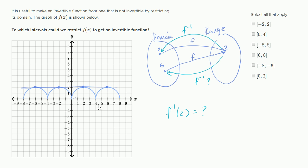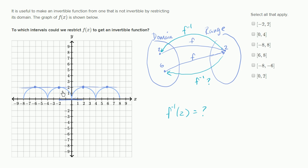So when we look at the intervals we could restrict to in order to get an invertible function, it would essentially be intervals where the function passes the horizontal line test — where every member of that restricted domain has a one-to-one mapping to a member of the restricted range. If we think about from negative two to two — including both endpoints — it does not pass the horizontal line test. F of negative two and F of two both map to two, so we don't know what F inverse of two should be. So let's rule out that first interval.